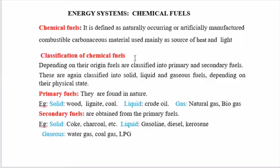Classification of chemical fuels: depending on their origin, fuels are classified into two types. Primary fuels, which are found in nature — examples: wood, crude oil, and natural gas. Secondary fuels, obtained from primary fuels — examples: charcoal, diesel, and LPG gas. Depending on their physical state, they are classified into solid, liquid, and gaseous fuels. Solid primary fuel: wood; liquid primary fuel: crude oil; gaseous primary fuel: natural gas or biogas. Solid secondary fuel: charcoal; liquid secondary fuel: gasoline or diesel; gaseous secondary fuel: water gas, coal gas, or LPG.